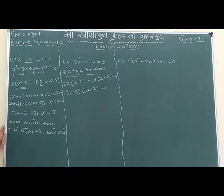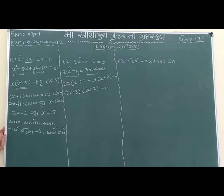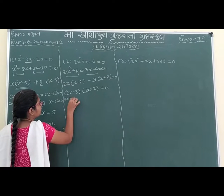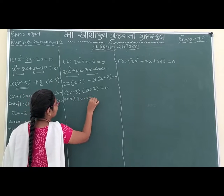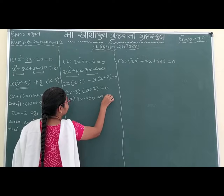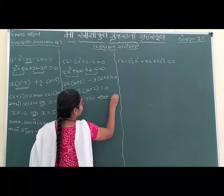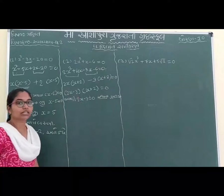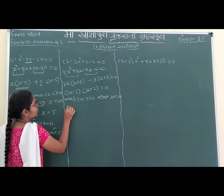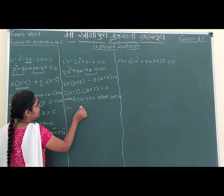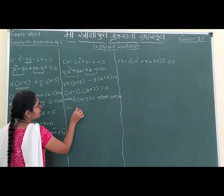We have to set 2x minus 3 equal to 0 and x plus 2 equal to 0. We are going to solve: 2x minus 3 is equal to 0, giving 2x minus 2x minus 3.